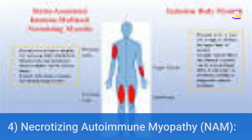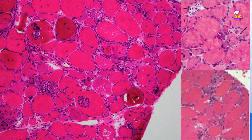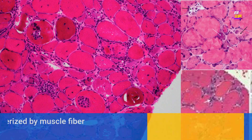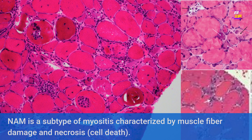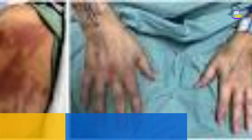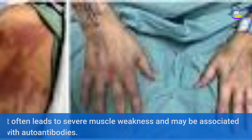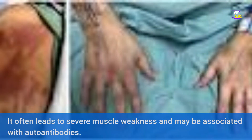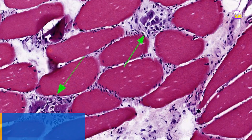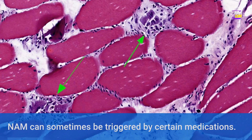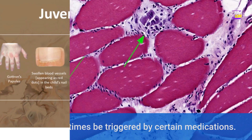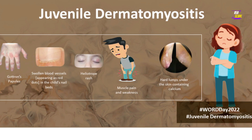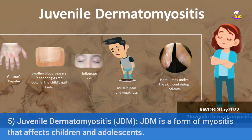IBM is associated with the presence of abnormal protein deposits within muscle cells. 4. Necrotizing Autoimmune Myopathy (NAM) — NAM is a subtype of myositis characterized by muscle fiber damage and necrosis (cell death). It often leads to severe muscle weakness and may be associated with autoantibodies. NAM can sometimes be triggered by certain medications.